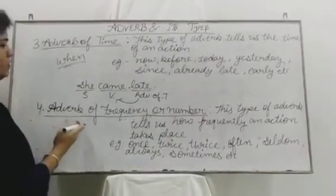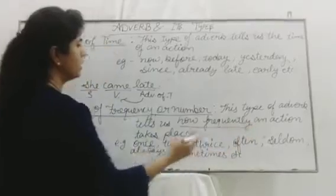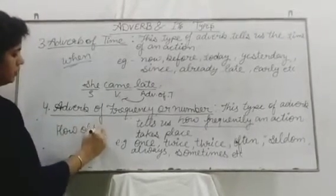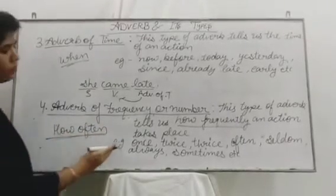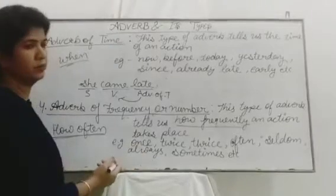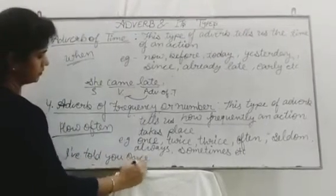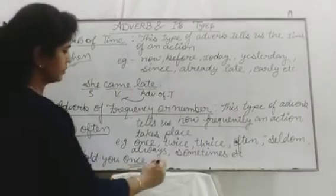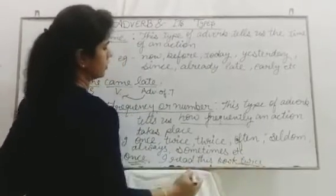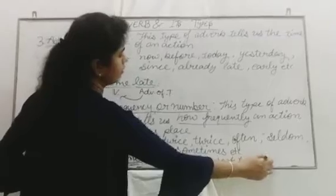The fourth type is adverb of frequency or number. This type of adverb tells us how frequently an action takes place, or gives the answer to 'how often?' Examples: once, twice, thrice, often, seldom, always, sometimes. For example: 'I have told you once' — adverb of frequency. Or 'I read this book twice' — the verb is 'read,' and 'twice' tells how often, making it an adverb of frequency.